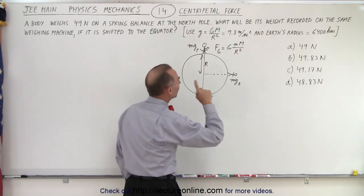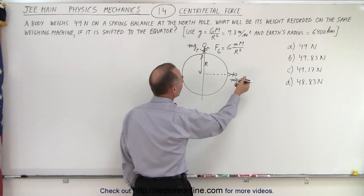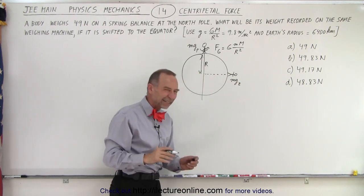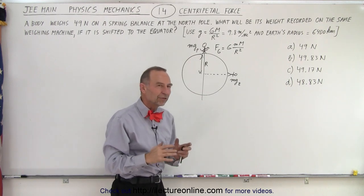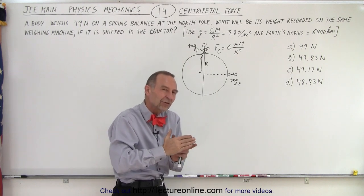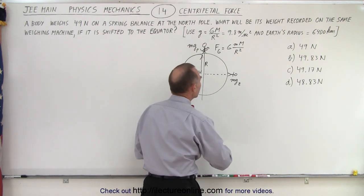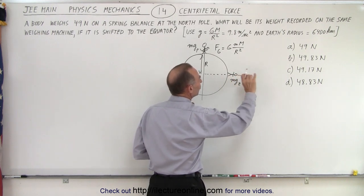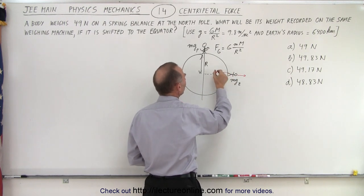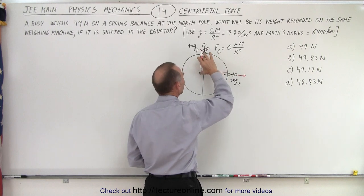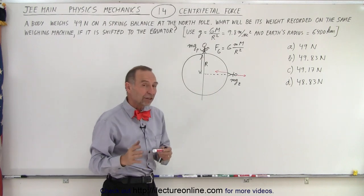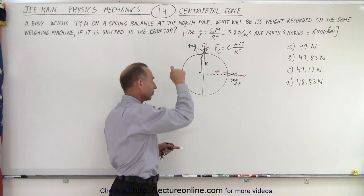But at the equator, you're rotating. And because of that, part of the force required to pull you towards the Earth is caused by the centripetal motion. Now that's kind of a hard thing to visualize. But if you think about, for example, when you're going around a circular path at a very high speed, you tend to feel that fictitious force pushing outward. So that means that the force of attraction in this direction is actually going to be less than it is over here because of that centripetal motion.